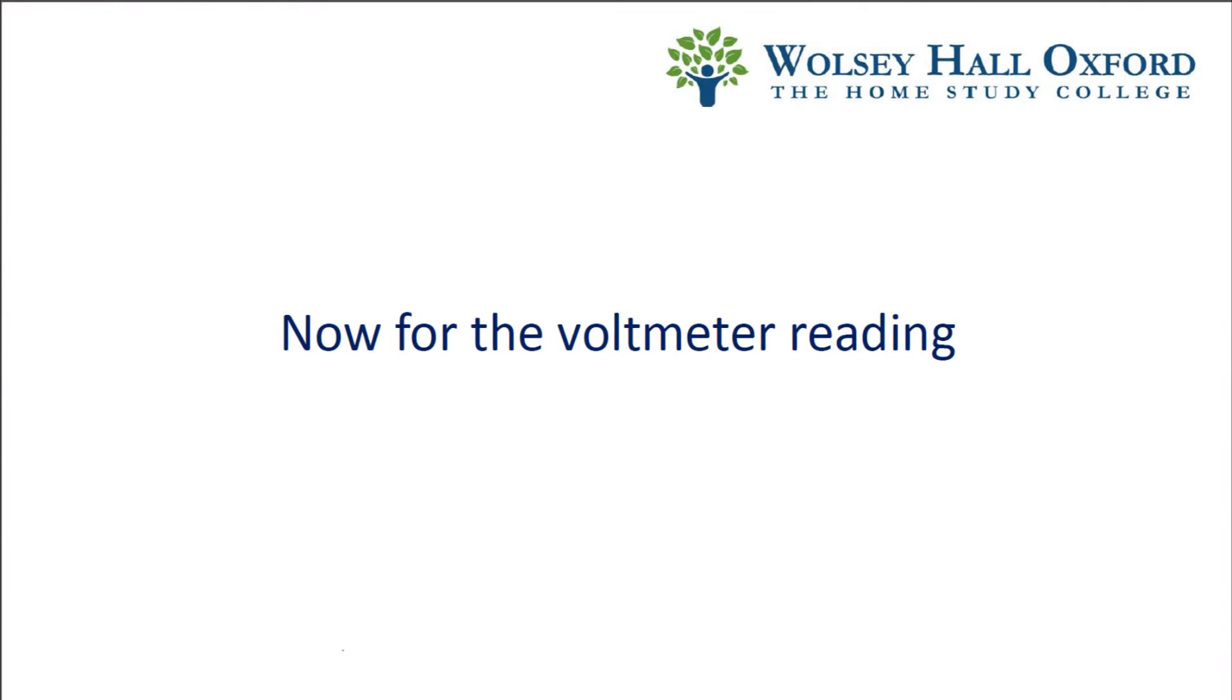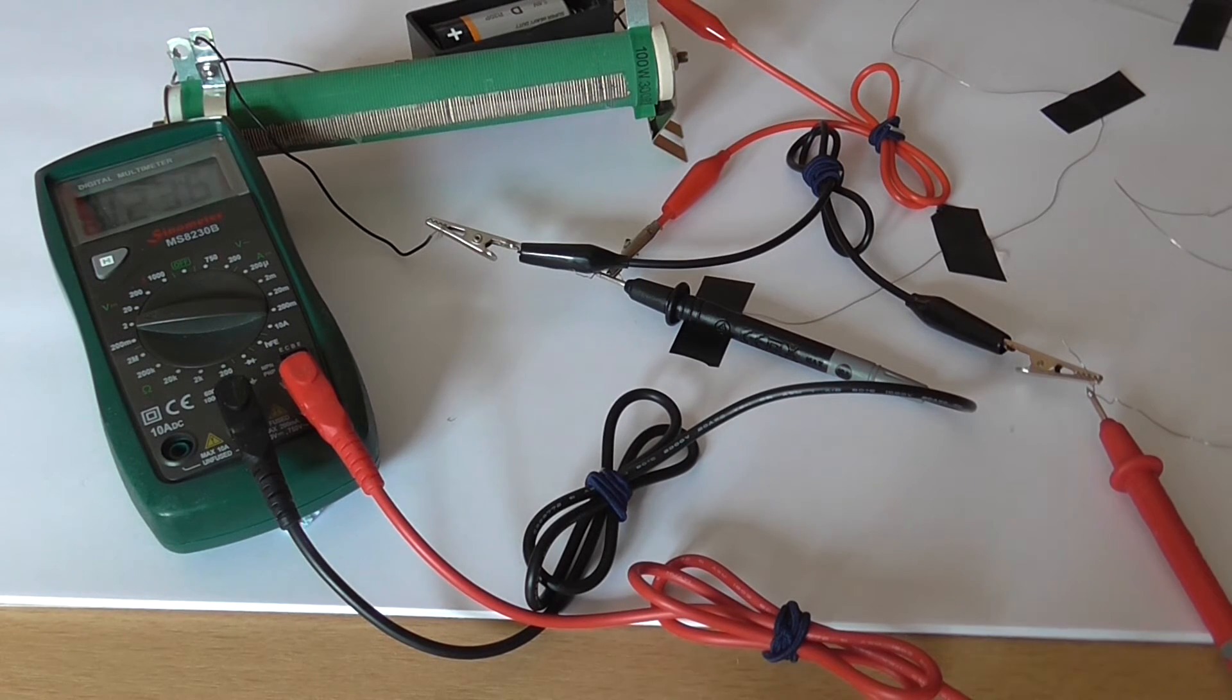Now we have an ammeter reading, we find the voltage. You should be able to see the multimeter is now in parallel with the wire and the reading is 1.236V.